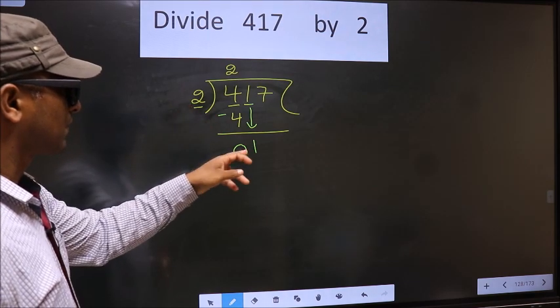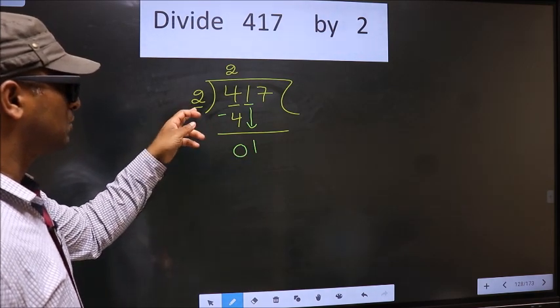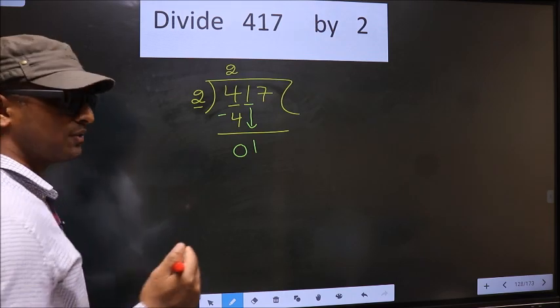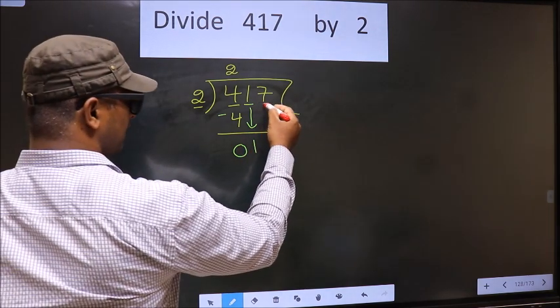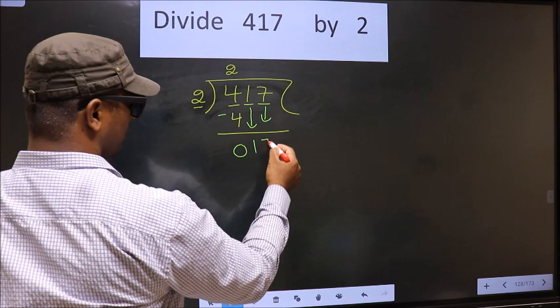here 2. 1 is smaller than 2. So what many do is they directly bring down the beside number 7 down.